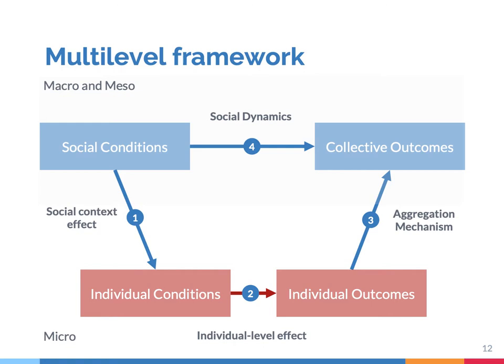Aggregation mechanisms are the propositions which relate the individual level to collective outcomes. For example, how does segregation emerge from individual behavior? Or how does polarization in society, which is a macro-outcome, result from individual actions?